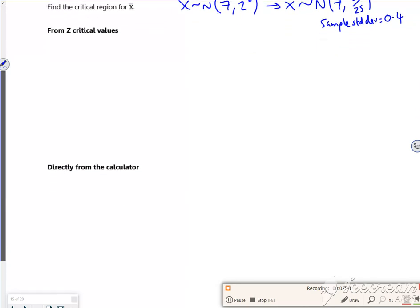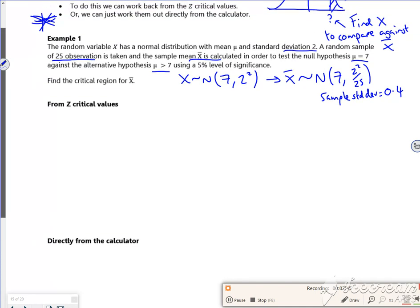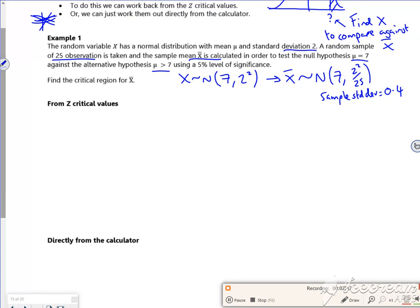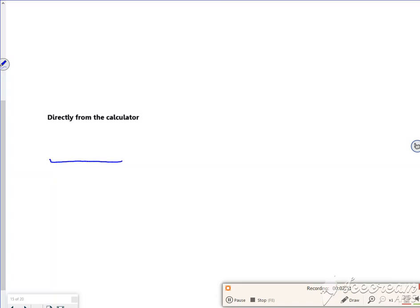Right, I'm going to ignore the Z value bit for now. I'm going to look down here. So I'm looking at the top 5%. That's what I want. I want the top 5%. So there's my 7, there's the top 5%. I want that X number.